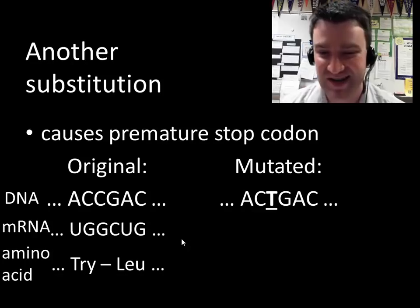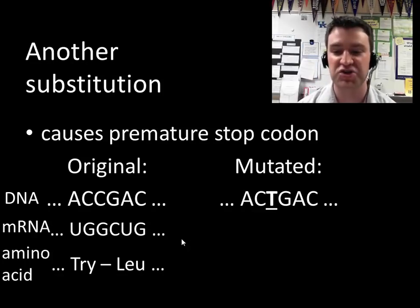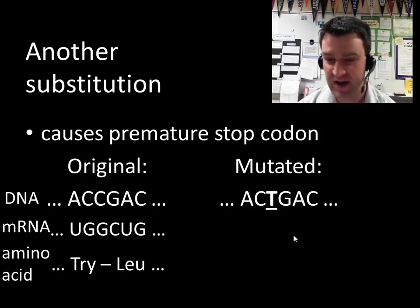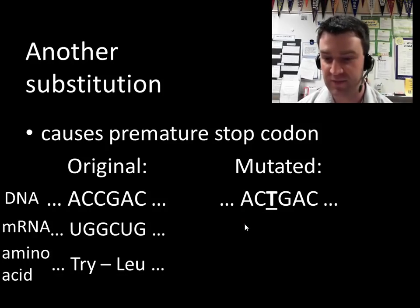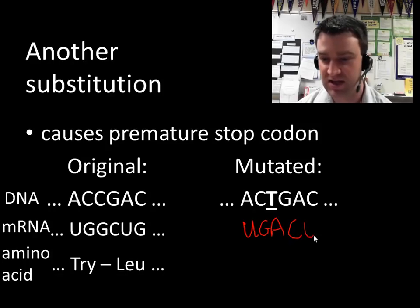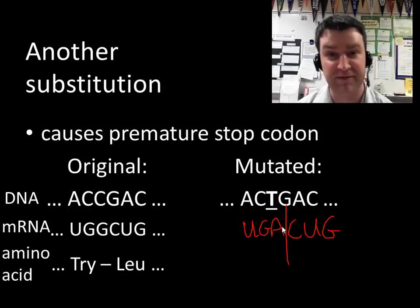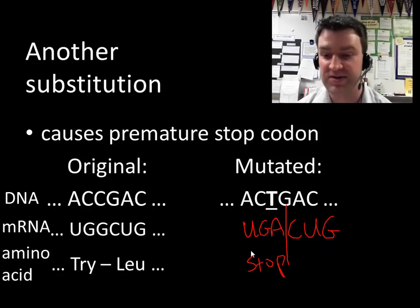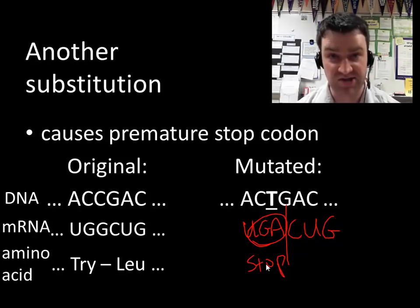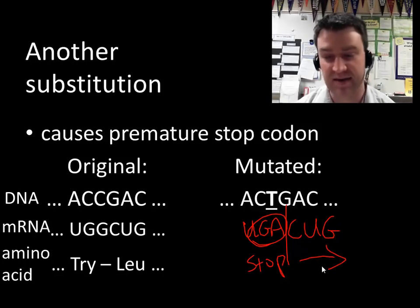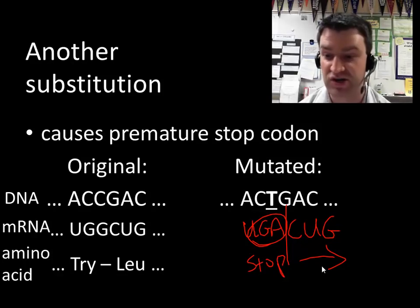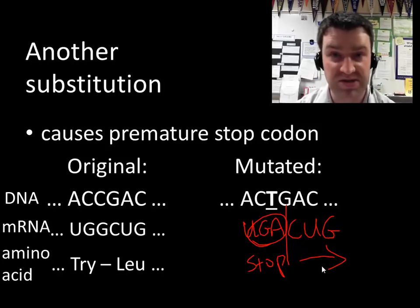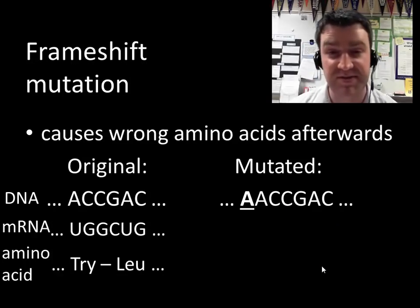Could a substitution cause an extremely deleterious effect on the protein's amino acid structure? Absolutely. If I switch a letter in the first codon, the mRNA might read UGA CUG — and UGA codes for a stop codon. The ribosome would connect all amino acids prior to this mutation but then stop right there, not adding any amino acids that would be part of the normal protein structure. This premature stop codon would almost certainly cause a non-functional protein to be built.